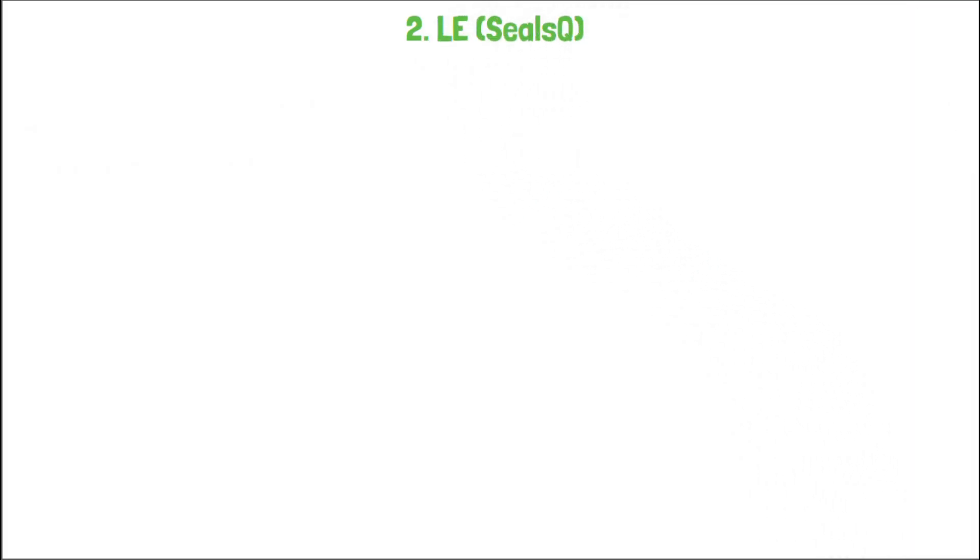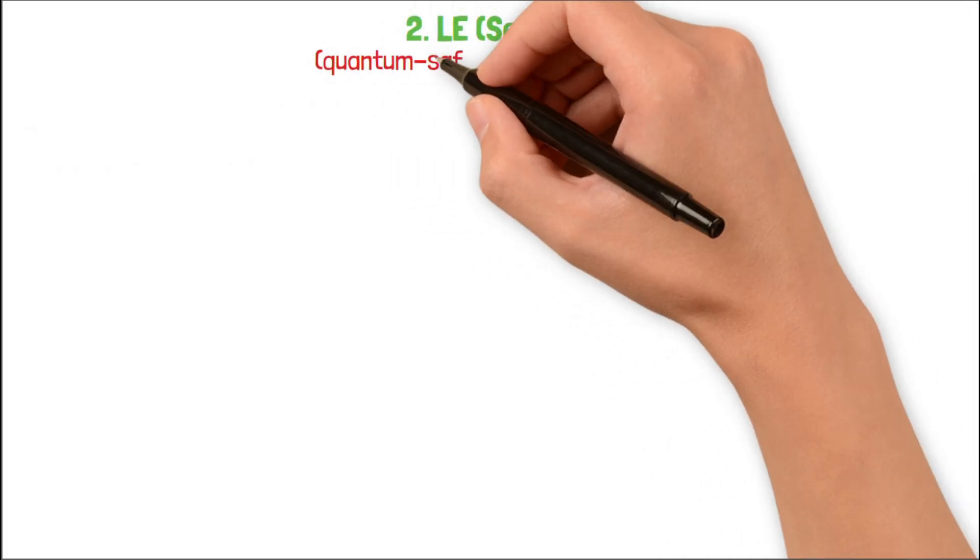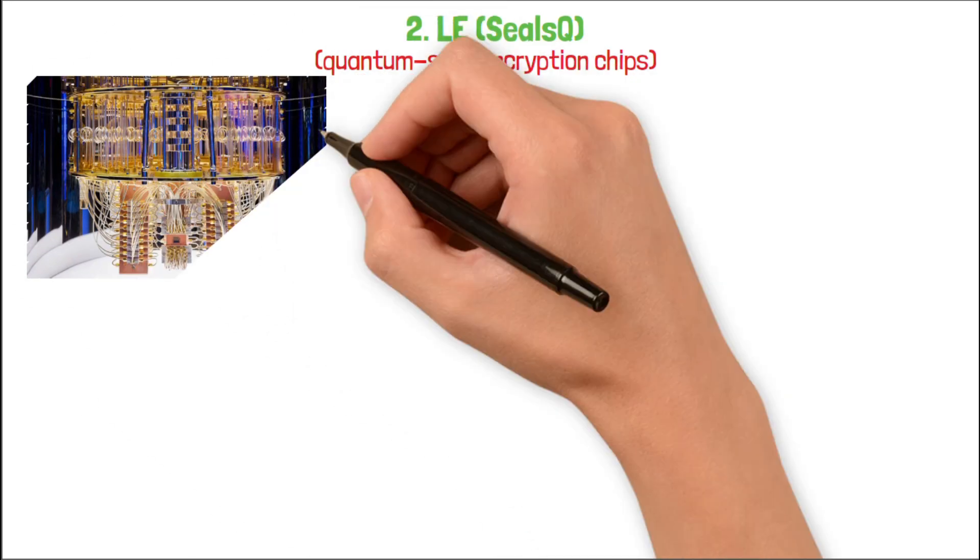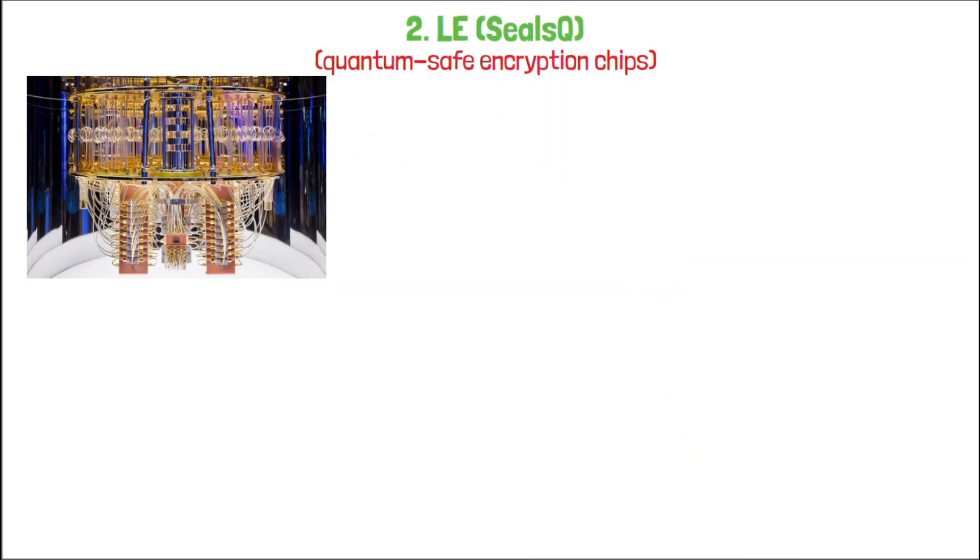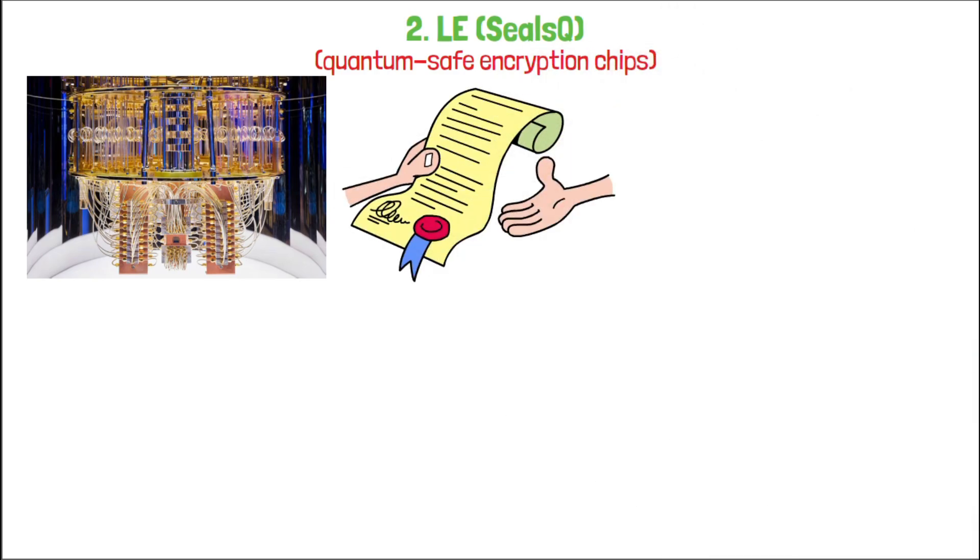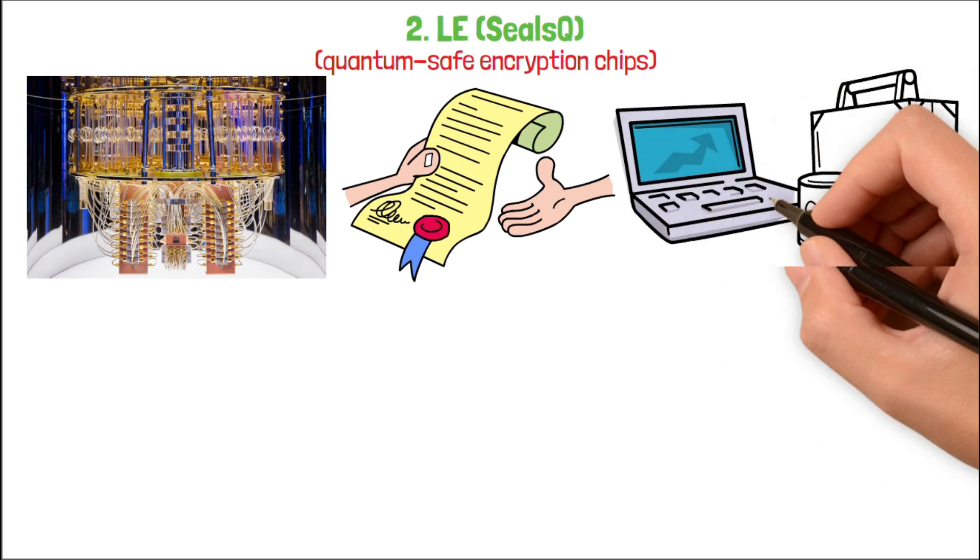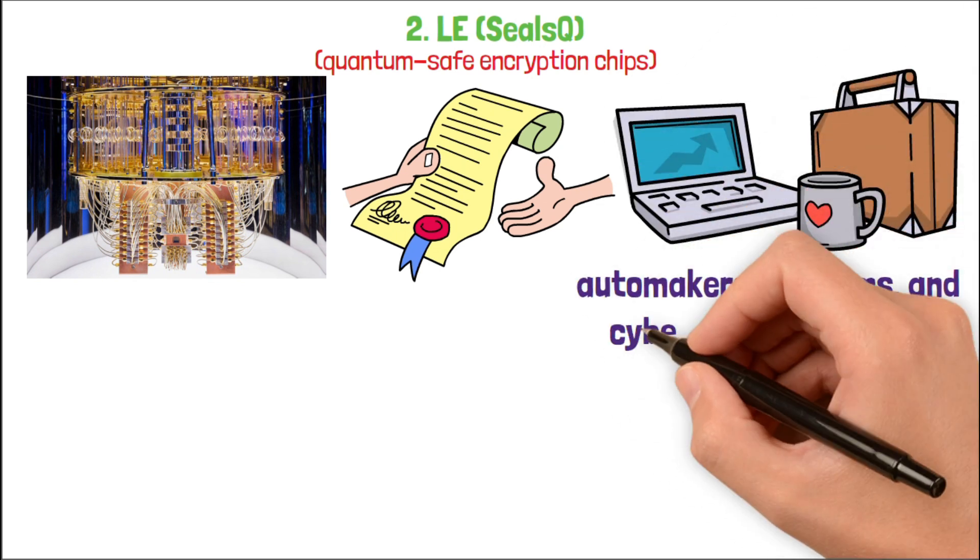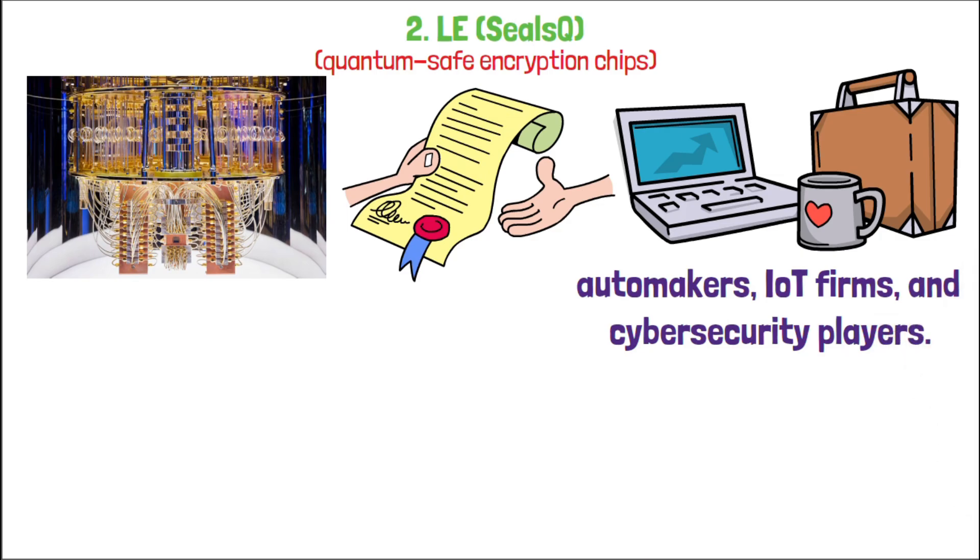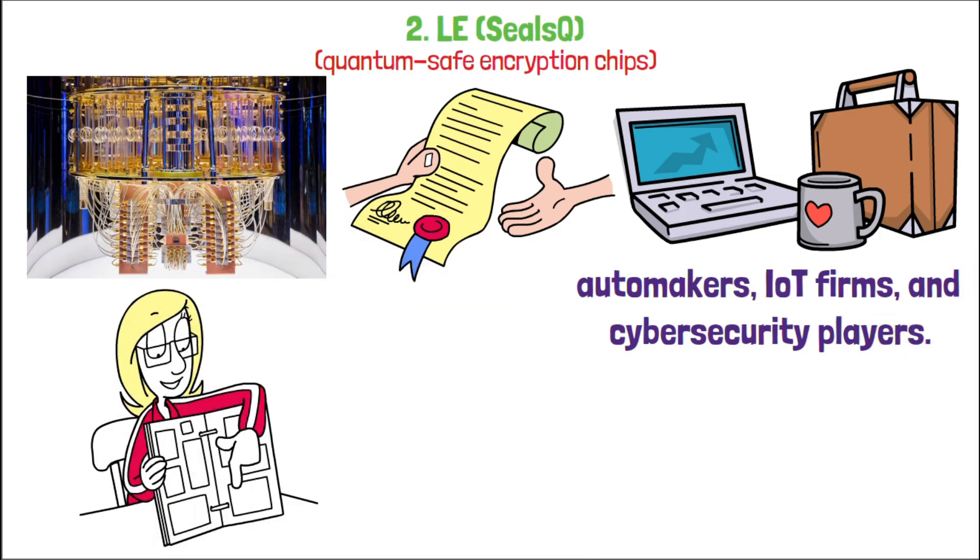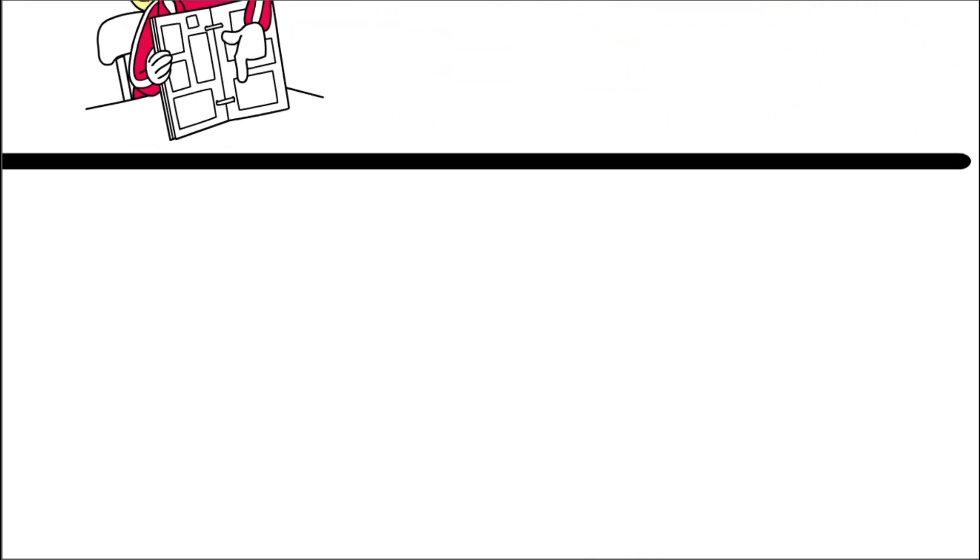Next, SealQ, focused on quantum-safe encryption chips. Why does that matter? Because quantum computers could break today's encryption standards. And by 2027, regulators may start mandating new post-quantum standards for every device. SealQ already has validated hardware and could see explosive demand from automakers, IOT firms, and cybersecurity players. The threat is real. And if they land OEM contracts, the upside could hit 30x to 80x.